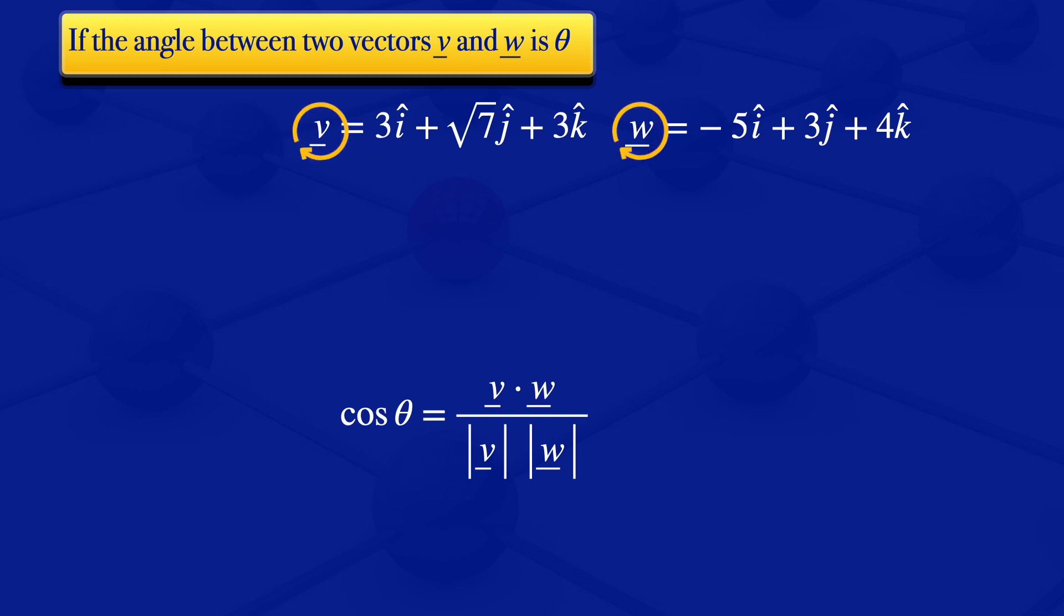So we have our V and W here. We can calculate the dot product of V and W. For the dot product, we'll be multiplying the corresponding elements, then we add them. That will give us 3 times negative 5 plus root of 7 times 3 plus 3 times 4, which will approximately be 4.937.